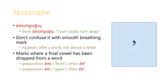The apostrophe, which in Greek is pronounced 'apostrophos', from the verb 'apostropho' meaning 'I turn aside' or 'I turn away', shouldn't be confused with a smooth breathing mark. The apostrophe appears after a word, not above a letter, and it marks where a final vowel has been dropped off the word. So the preposition 'apo', which means 'from', will often appear just as 'ap' with an apostrophe marking where the omicron used to be. And the preposition 'epi', meaning 'upon', is often written just 'ep', with the iota having dropped off and being replaced by an apostrophe.